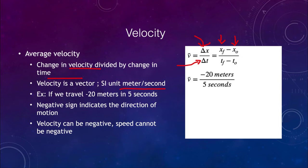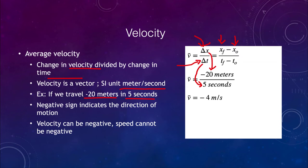Looking at an example: traveling negative 20 meters in five seconds. Traveling negative 20 meters simply means we're traveling in the negative x direction — opposite the way we defined as positive. So if positive is to the right, we are moving to the left. The change in x is negative 20 meters, the change in time is five seconds, and dividing those gives a velocity of negative four meters per second. That negative sign indicates the direction of motion — the speed is four meters per second, but the negative sign gives us the direction.